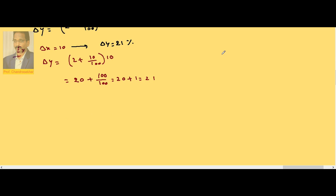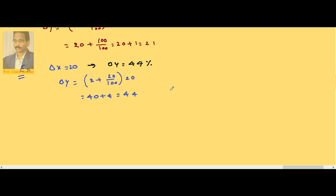Delta x is 20. Then delta y becomes 2 plus 20 by 100 into 20, so it is 40 plus 4 equals 44. That means if the x changes by 20 percent, then y changes by 44. In a similar way, if I take the third case, that is the present one...